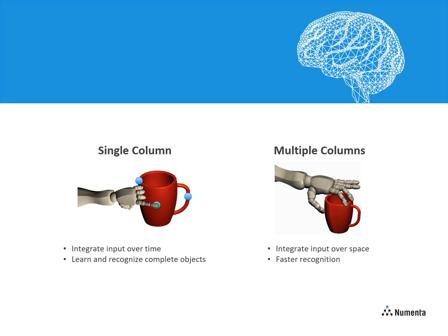In summary, each column integrates inputs over time, so that individual columns can learn and recognize complete objects. Multiple columns integrate inputs over space, so that recognition can occur faster.